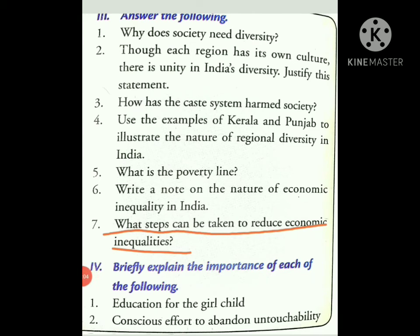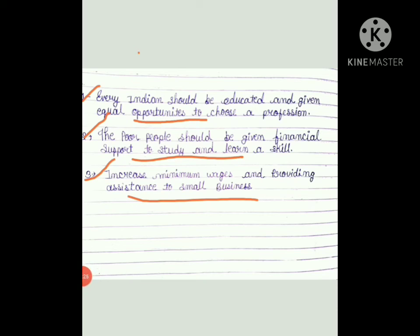Question 7: what steps can be taken to reduce economic inequality? There is no specific answer in the book, so here is a written answer with three points. First: every Indian should be educated and given equal opportunities to choose a profession. Second: the poor people should be given financial support to study and learn a skill. Third: increase minimum wages and provide assistance to small businesses.